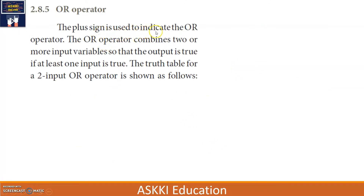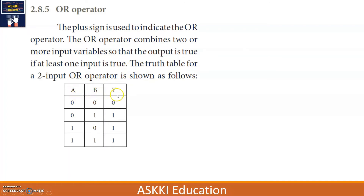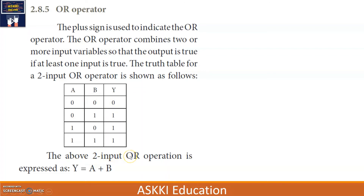Coming to the OR operator — the plus sign is used to indicate OR. The OR operator combines two or more input variables and gives output true if at least one input is true. In the truth table for two-input OR, when B is 1 the output is 1, when A is 1 the output is 1, when both are 1 the output is 1, and only when both are 0 is the output 0. The expression is Y = A + B.